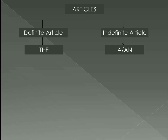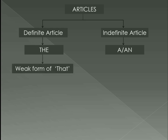Indefinite articles are 'a' and 'an'. Their uses are the same, but which one to use depends on the sound that follows. They are used before singular nouns and do not point out a definite object or person. 'The' is a weak form of 'that', and 'a'/'an' is a weak form of 'one'. If I say 'one person', that means I do not particularize — any Tom, Dick, or Harry can be that person.